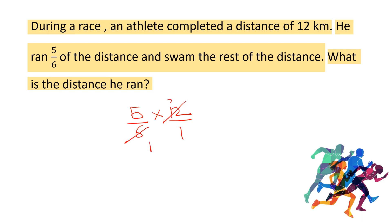So, what is left in the numerator? 5 times 2 and the denominator is 1. So, we are not going to write it. 5 times 2 is 10. So, the athlete covered 10 kilometers by running.